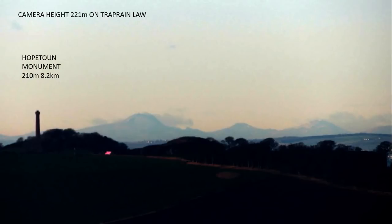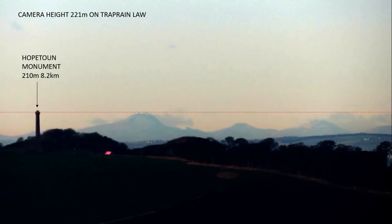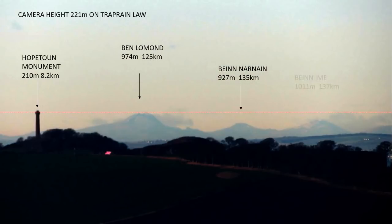The Hopeton Monument is 210 meters and is 8.2 kilometers away — that's this tower here on the left-hand side of the screen. This means we are looking slightly downwards towards the top of the tower. Therefore, if the earth was flat, anything that is 210 meters above sea level or more should appear in our field of view above the red dotted line. However, we see three mountains, all of which are considerably more than 210 meters above sea level at their summits.